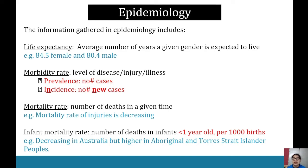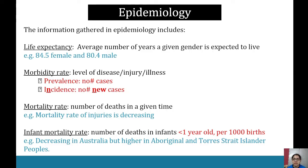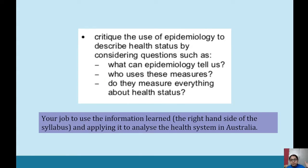Mortality rate is the number of deaths in a given time — for example, mortality rates for injuries are decreasing. Finally, infant mortality rate refers to the number of deaths of children under the age of one year old, measured per thousand births — don't forget it's per thousand births, not a standalone number. In Australia it is decreasing, but it remains higher in Aboriginal and Torres Strait Islander peoples.